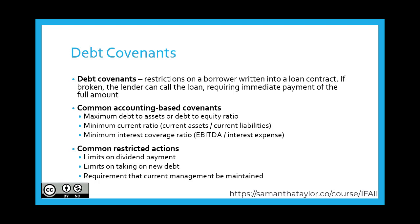Common accounting-based covenants include a maximum debt-to-assets or maximum debt-to-equity ratio, a minimum current ratio meaning the proportion of current assets to cover current liabilities, and a minimum interest coverage ratio meaning EBITDA as proportional to interest rate expenses. Common restricted actions include limits on dividend payments, limits on taking on new debt, and requirements that current management must be maintained.